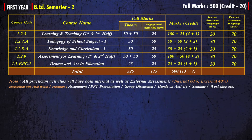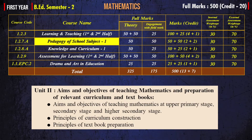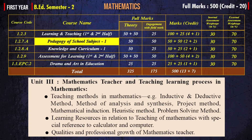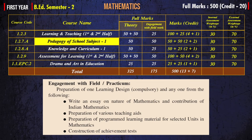In B.Ed Semester 2, there are five papers. Course 1.2.3 is Learning and Teaching with two halves. Course 1.2.7A is Pedagogy of School Subjects, the method subject. Course 1.2.8A is Knowledge and Curriculum 1. Course 1.2.9 is Assessment for Learning with two halves, and the last paper is EPC 2 - Drama and Art in Education. In mathematics pedagogy, Unit 1 covers nature and theoretical aspects of mathematics education. Unit 2 is aims and objectives of teaching mathematics and curriculum preparation. Unit 3 covers the mathematics teacher and teaching-learning process. Unit 4 is learning design and Unit 5 is assessment and evaluation.